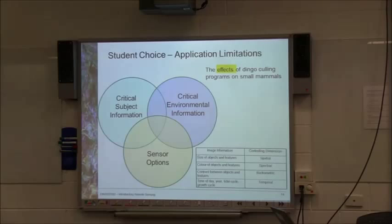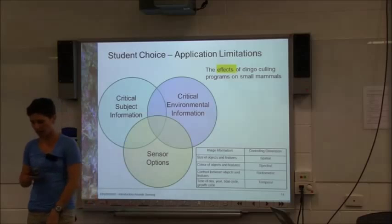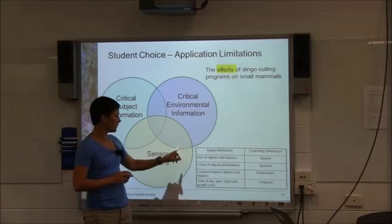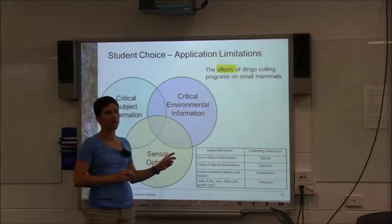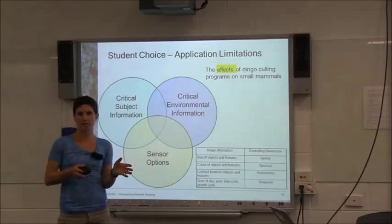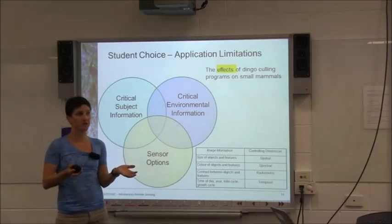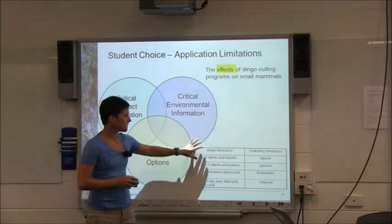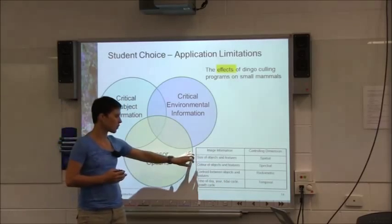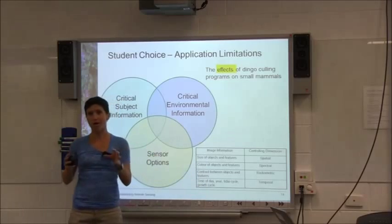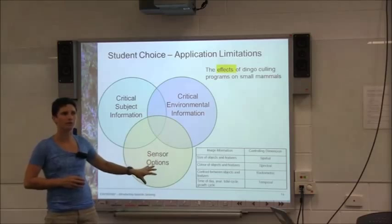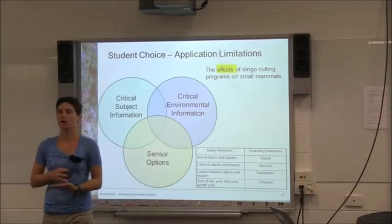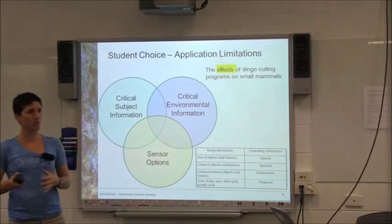Now I'll bring you back to this table I showed at the beginning of today's lecture. It's really about what we want to be able to do when finding sensor options. If we've gone down the line of suggesting earth observation remote sensing isn't great for dingo culling but maybe we want to look at some other environmental aspect, what we really want is to get information about the size, the colours, some contrast you need to see, and time information, then link that to spatial, spectral, temporal, and radiometric dimensions. When we do that we can say which particular satellite to use to monitor that effect.